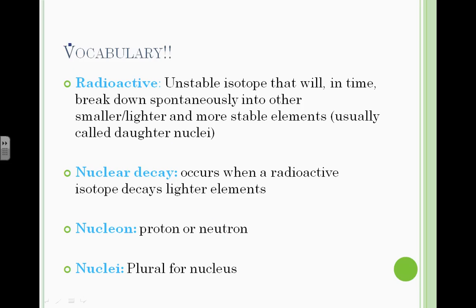Well, just a little bit of vocabulary that you'll need to know in order to do well in this unit. When we say an isotope is radioactive, we mean it's unstable. The nucleus is unstable. And it's going to break down spontaneously on its own into lighter and more stable elements. And those are usually called daughter nuclei.